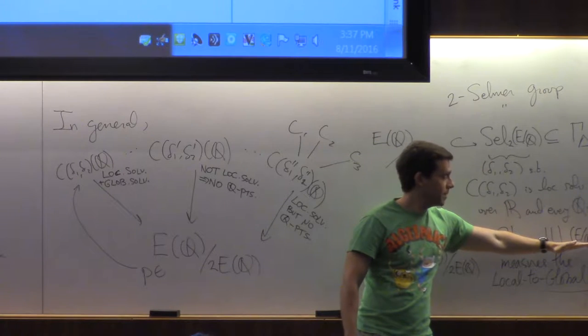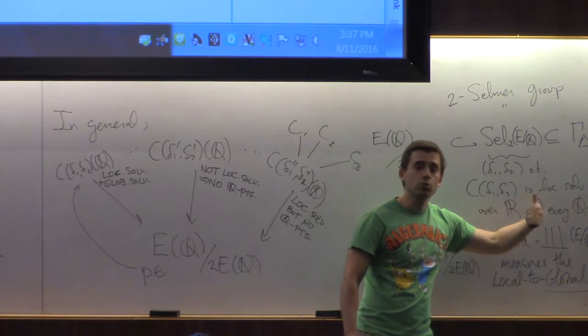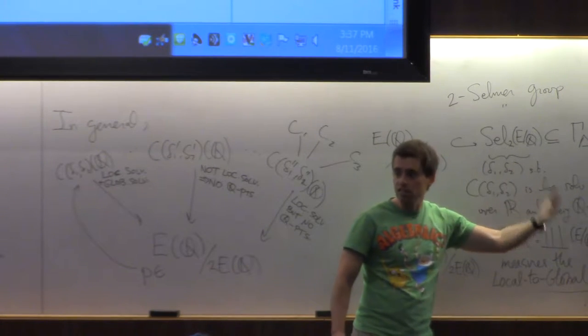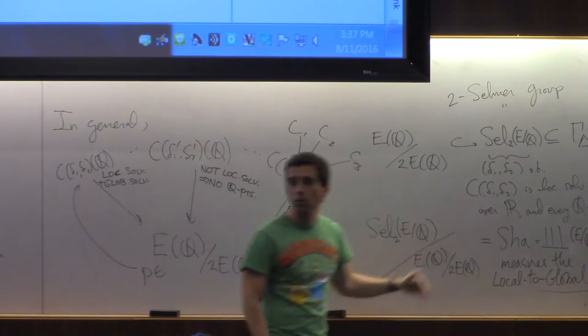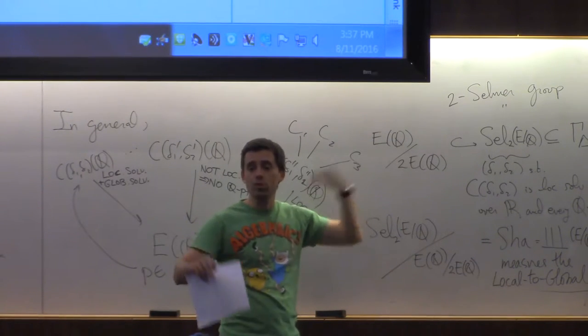So for all we know, there could be some SHA that has two torsion, four torsion, eight torsion, 16 torsion, and so on and so forth forever. And my algorithm in quotes would never end.